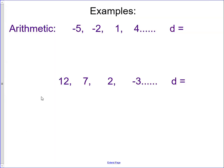Let's look at a few examples of arithmetic sequences. An arithmetic sequence is one where it has a common difference — they're adding the same number over and over again. Here we have negative 5 going to negative 2, which is adding 3. From negative 2 to positive 1 is also adding 3. From positive 1 to positive 4 is adding 3. So our common difference is add 3, and our next term in this sequence would be 4 plus 3, which is 7.